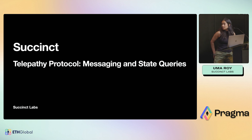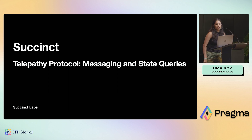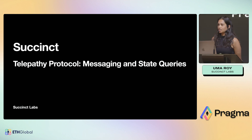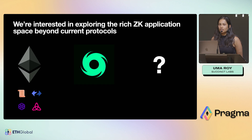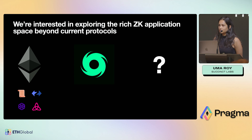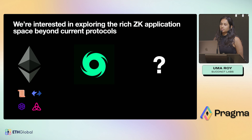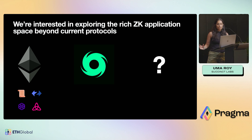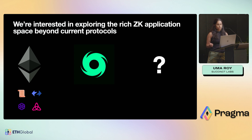Hello, I'm Uma. I work on Succinct, and today I'm going to be talking about the Telepathy protocol, which lets you do cross-chain messaging, and a new protocol we've been working on for cross-chain state queries. At Succinct, we're interested in exploring the rich ZK application space beyond current protocols — beyond ZKEVMs and privacy protocols like Tornado Cash — and what benefits ZK can provide to the blockchain space more broadly.